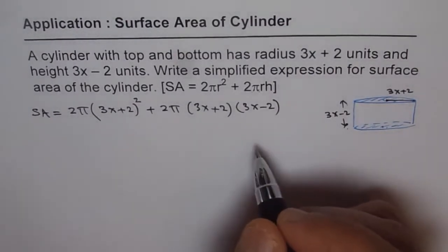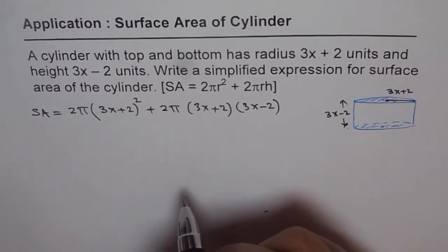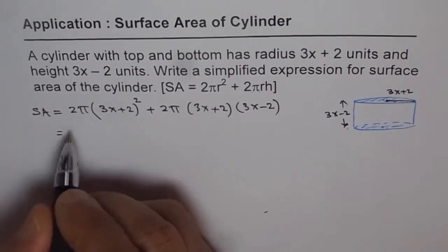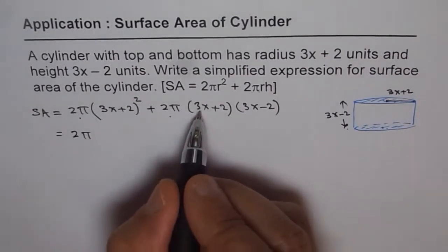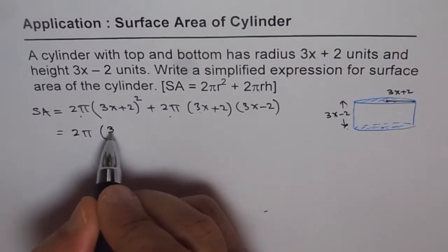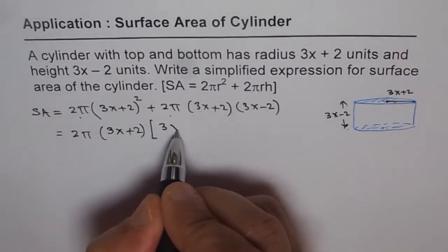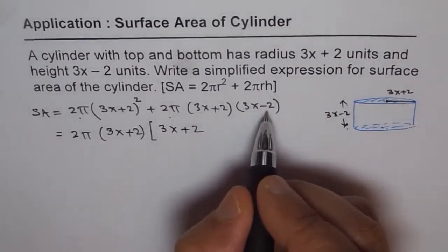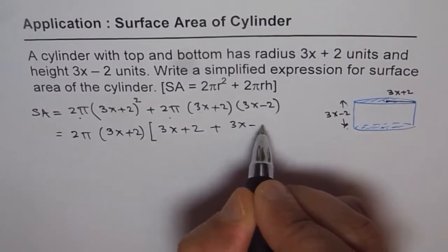At this stage you have two options. You can multiply each and then combine the terms. But I think the better way is factor whatever is common. That will reduce your work to a large extent. So you get 2 pi and 2 pi as common and we also have 3x plus 2 common. We can take that as a common factor. So we are left with 3x plus 2 from the first term and 3x minus 2 from the next term plus 3x minus 2.